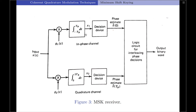The correlator in the upper branch produces coefficient X1 and the correlator in the lower branch produces coefficient X2. These resulting in-phase and quadrature channel correlator outputs are next compared with a threshold of 0 volts, creating estimates of theta(0) — denoted theta-cap of 0 — and theta(tb) — denoted theta-cap of tb — in the in-phase and quadrature phase channels respectively. Finally, these phase decisions are interleaved to reconstruct the original binary wave with a minimum average probability of symbol error.